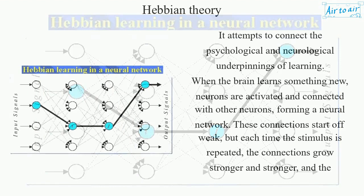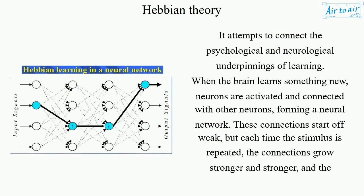It attempts to connect the psychological and neurological underpinnings of learning. When the brain learns something new, neurons are activated and connected with other neurons, forming a neural network.